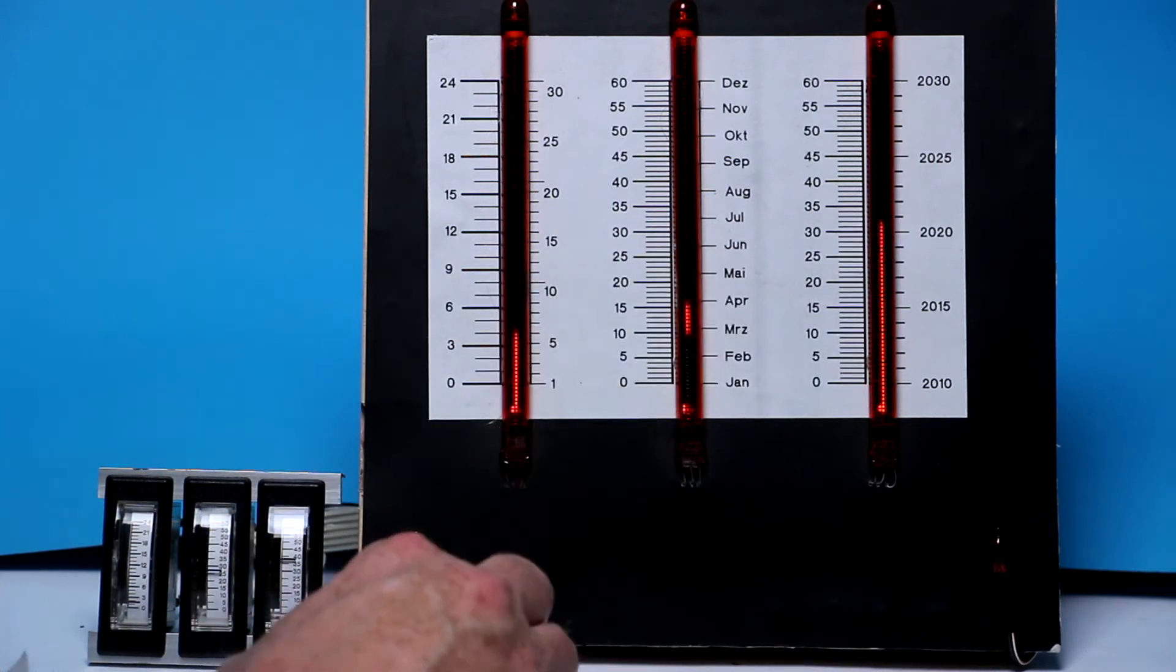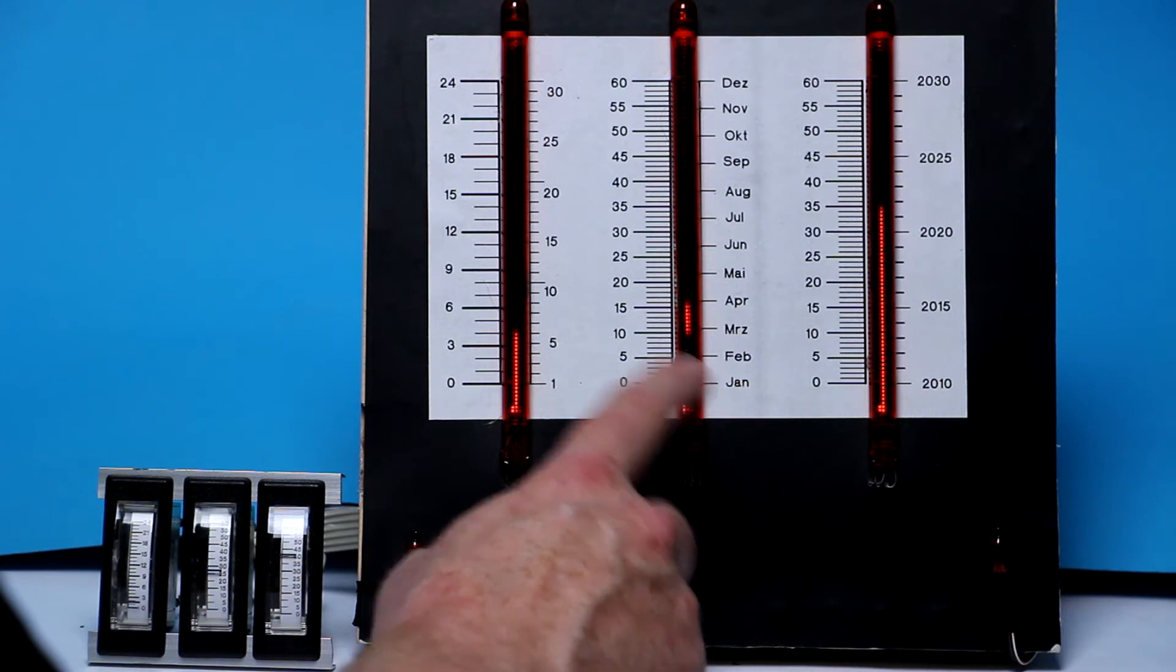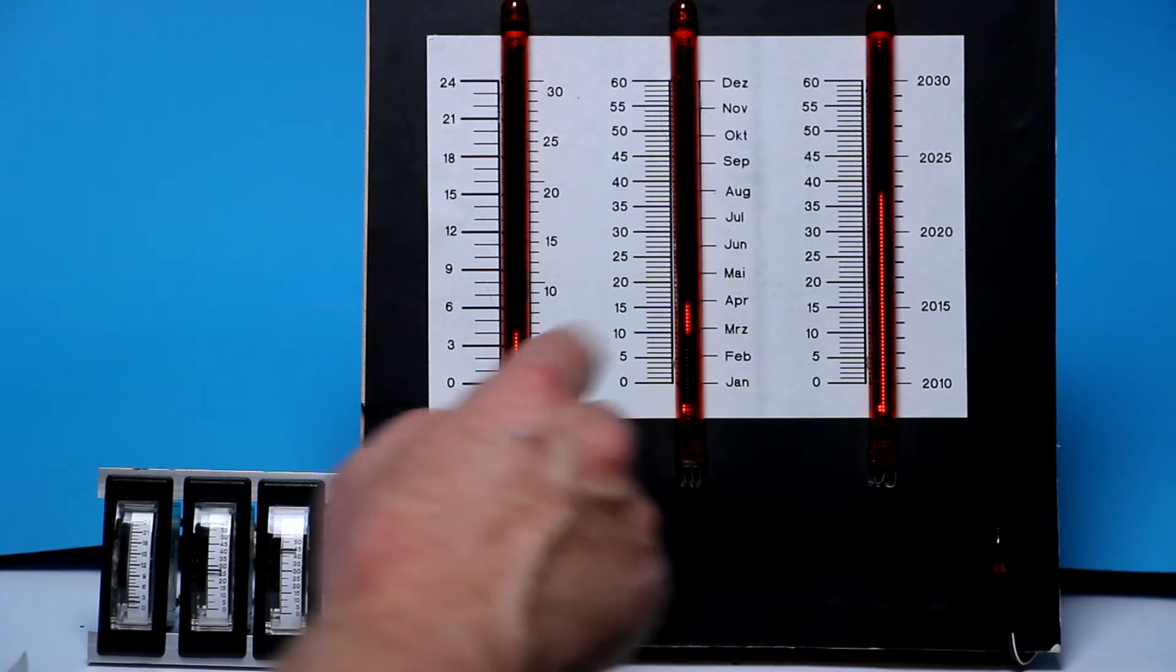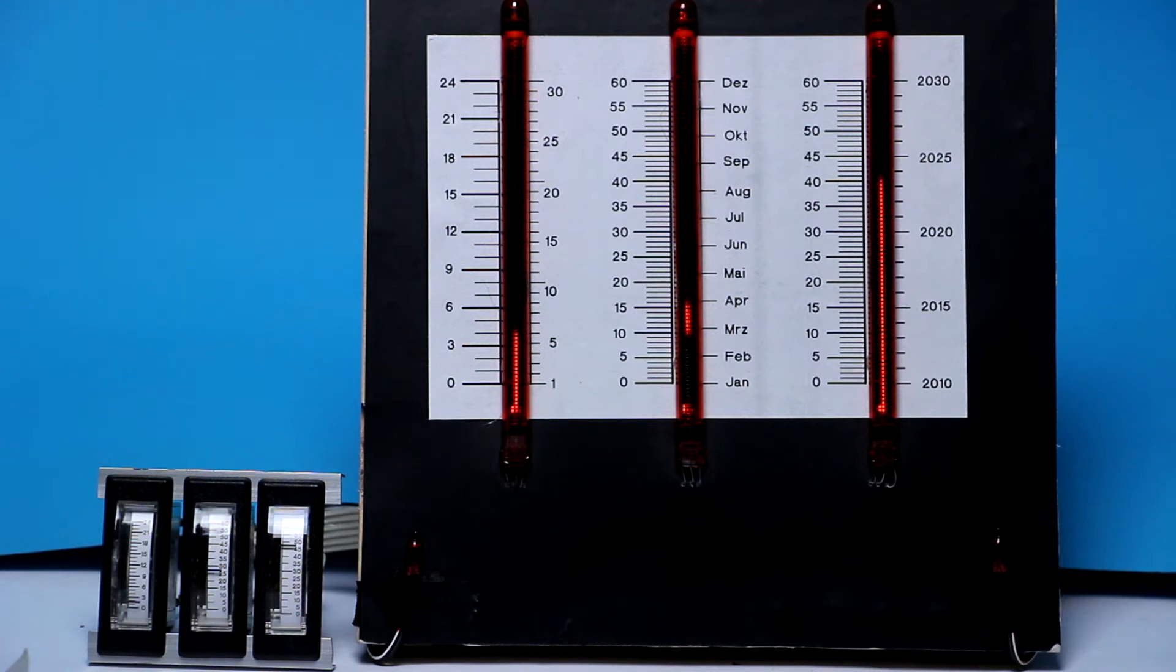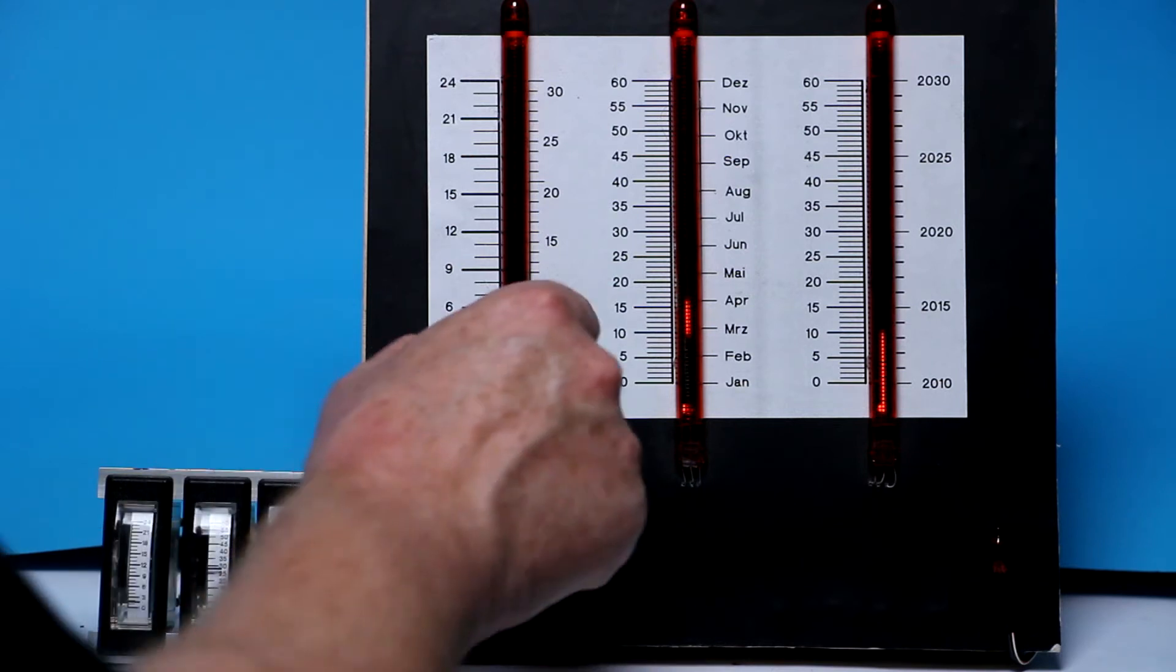And you will find modern uses of these bar graph Nixie tubes on the one side with spectrum analyzers. I've built my own one also with 12 of these IN13 Nixie tubes. The other one is thermometers with a bar graph thermometer. I will give you the link down below for a kit from German Nixie kit maker Jürgen Grau or Mr. Nixie, who sells these with a very beautiful acrylic case and an acrylic scale.